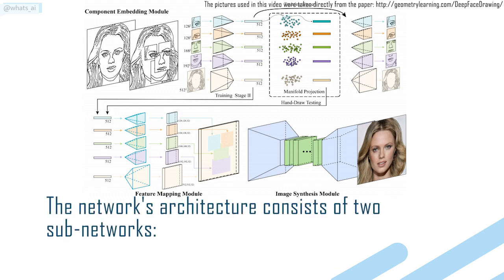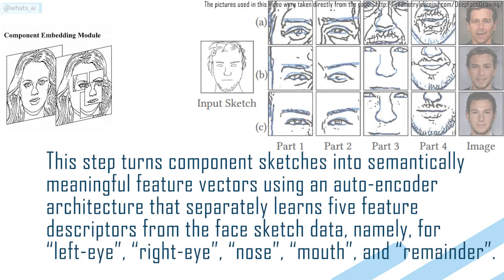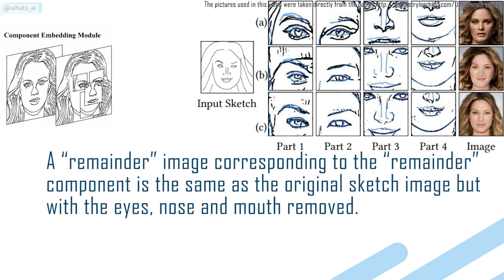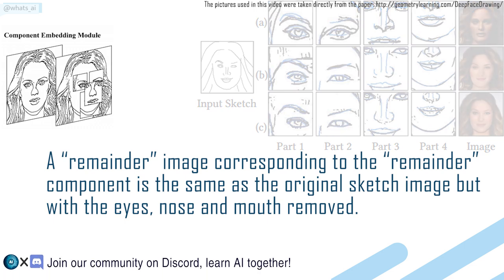The network's architecture consists of two subnetworks. The first subnetwork is the Component Embedding module, which is responsible for learning feature embeddings of individual face components using separate autoencoder networks. This step turns component sketches into semantically meaningful feature vectors using an autoencoder architecture that separately learns five feature descriptors from the face sketch data: left eye, right eye, nose, mouth, and remainder. The remainder image is the same as the original sketch but with the eyes, nose, and mouth removed.